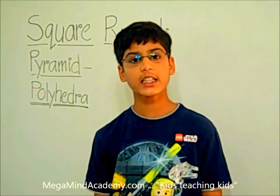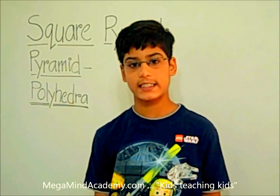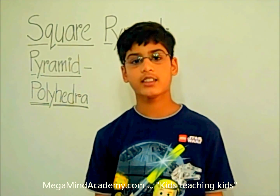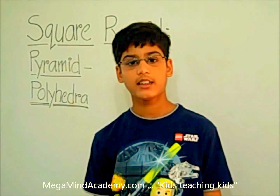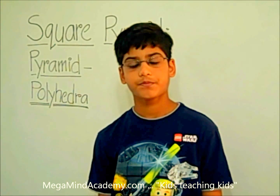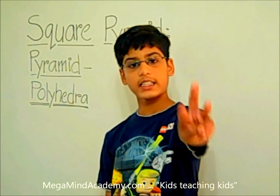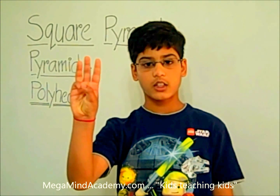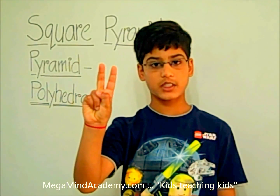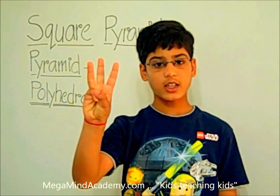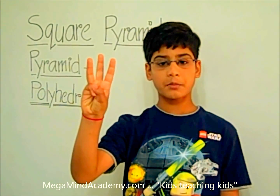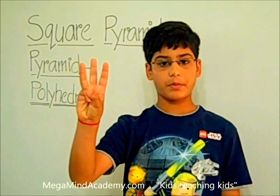Polyhedra is a 3D figure which has all the faces as flat surfaces, and all the faces are a polygon. That means none of the faces are curved. There are three types of polyhedra: the first one is platonic solids, the second one is prisms, and the third one is pyramids. Today we're going to learn about the third one — pyramids.